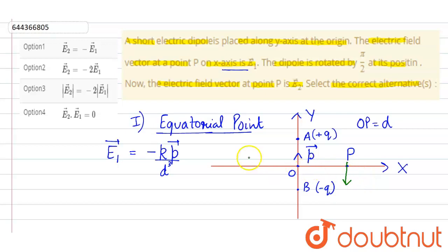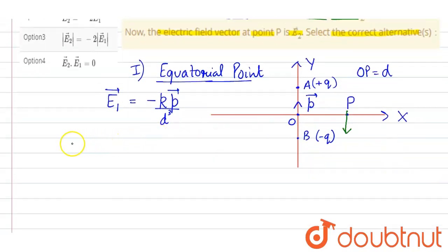Next, it is written that dipole is rotated by π/2. Now if dipole is rotated by π/2 that means now the dipole will be at this position. Here will be a and here will be b. And we have to find the electric field at this point only. So now this will be axial point.